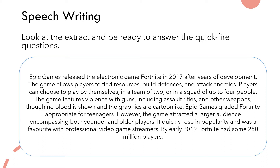Epic Games released the electronic game Fortnite in 2017 after years of development. The game allows players to find resources, build defences, and attack enemies. Players can choose to play by themselves, in a team of two, or in a squad of up to four people. The game features violence with guns including assault rifles and other weapons, though no blood is shown and the graphics are cartoon-like. Epic Games rated Fortnite appropriate for teenagers; however, the game attracted a much larger audience encompassing both younger and older players. It quickly rose in popularity and was a favourite with professional video game streamers. By early 2019, Fortnite had some 250 million players.